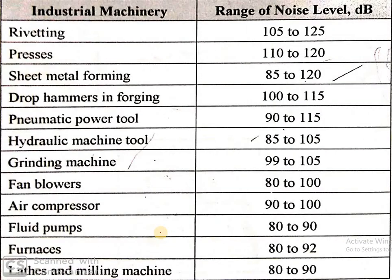Now let's see the range of noise levels. For industrial machinery, the ranges start from 80 to 125 decibels. Lathe machines, furnaces, and fluid pumps generate lower decibel noise. Whereas press machines, sheet metal forming, droppers, hammers, and forging generate higher noise — press machines generate the most noise in this category.